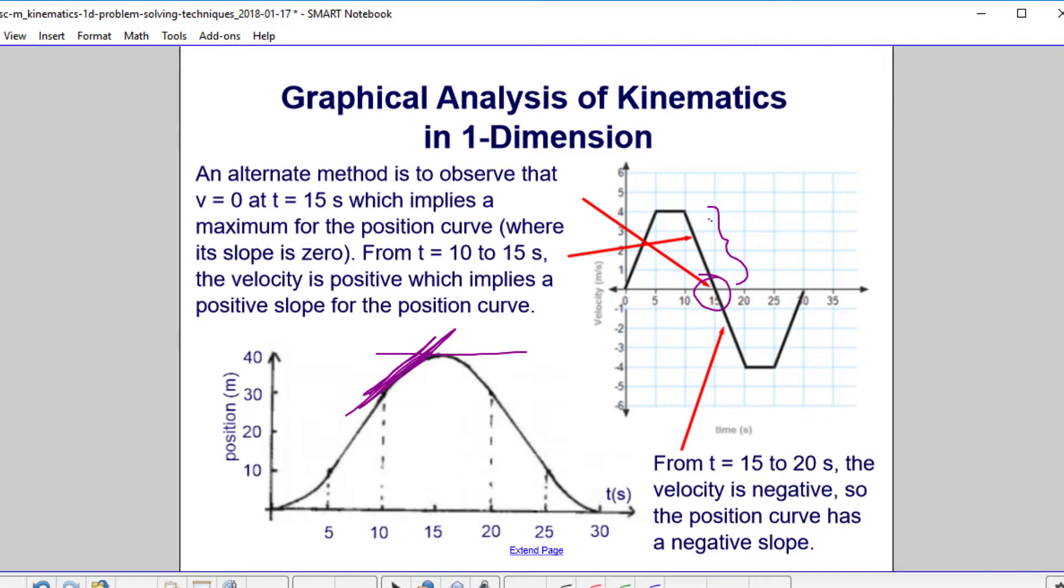Now, from 15 to 20, the velocity is negative. It's under the x-axis. So the position curve has a negative slope. Just like that. And that's another way of saying concave down.